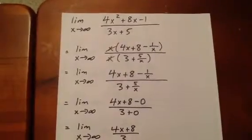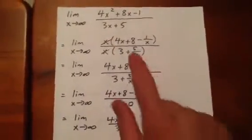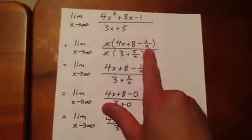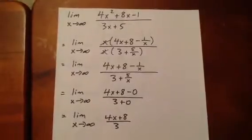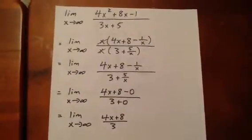We're going to factor x out of both numerator and denominator, leaving us in the numerator with a second factor of 4x plus 8 minus 1 over x, and in the denominator of 3 plus 5 over x.